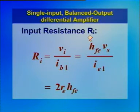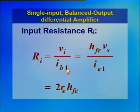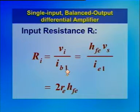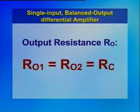Input resistance RI equals input voltage divided by input current, that is VI divided by IB1. Substituting IB1 equal to IE1 divided by HFE and the expression for IE1, we get RI equal to 2·RE·HFE. Output resistance R0 is given by R01 equal to R02 equal to RC.